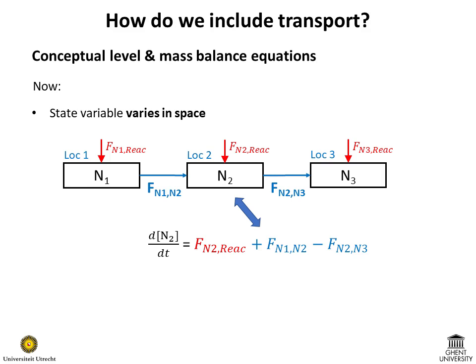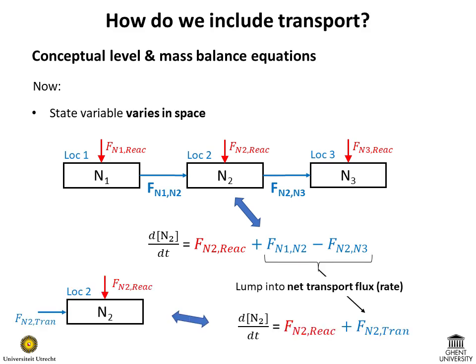As a result of the spatial heterogeneity, the state variable n at a given location changes in time not only due to interactions with other state variables but also due to interactions with the state variable n in other locations. We lump the fluxes representing these spatial interactions into one quantity and call it the net flux due to transport or the net transport rate.